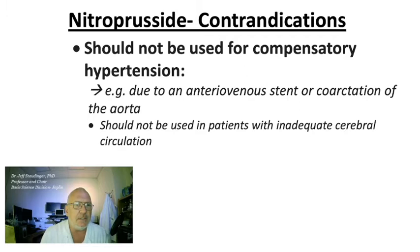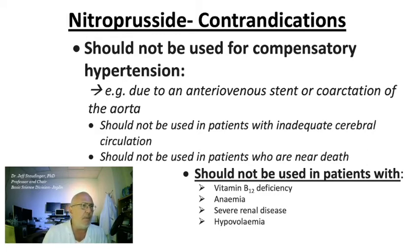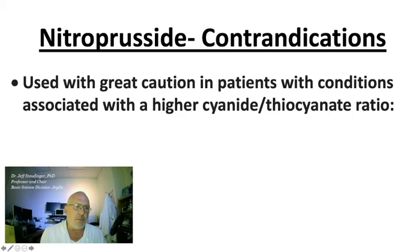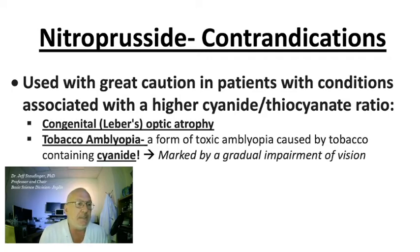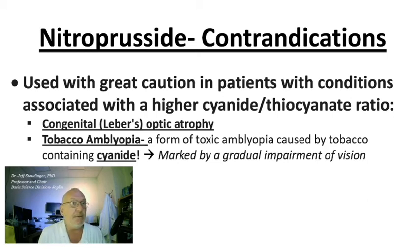It should not be used in patients with inadequate cerebral circulation, patients who are near death, patients with vitamin B12 deficiency, anemia, severe renal disease, or hypovolemia. This drug is used with great caution in patients with conditions associated with a higher cyanide-to-thiocyanate ratio, specifically patients with congenital Leber's optic atrophy or tobacco amblyopia — a form of toxic amblyopia caused by tobacco, which contains cyanide — causing gradual impairment of vision.